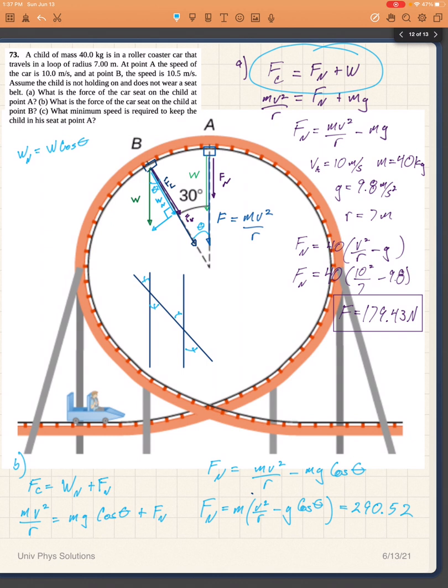But in the case that the child is going around just at the right speed such that the track and the seat had to do no work to try to keep it going in a circle, the weight could provide all of the centripetal force that is necessary.